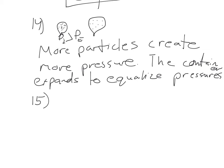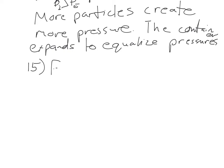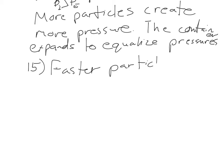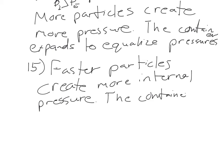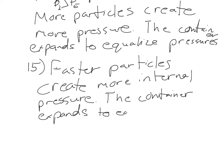Question 15: molecular level explanation for volume increase in experiment D. In D, we added temperature. Faster particles create more internal pressure, but the outside pressure is exactly the same — heating the inner molecules doesn't affect outside particles. With inside pressure being bigger than outside pressure, the container expands to equalize pressures.